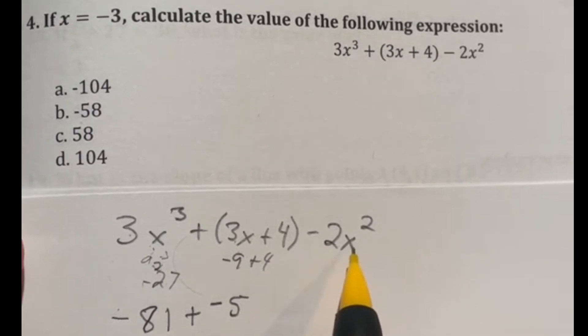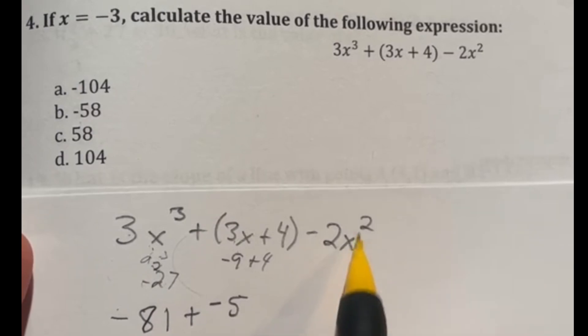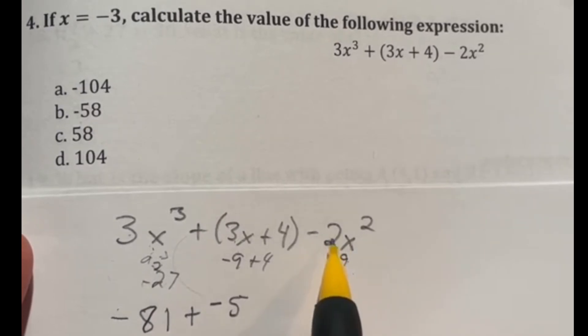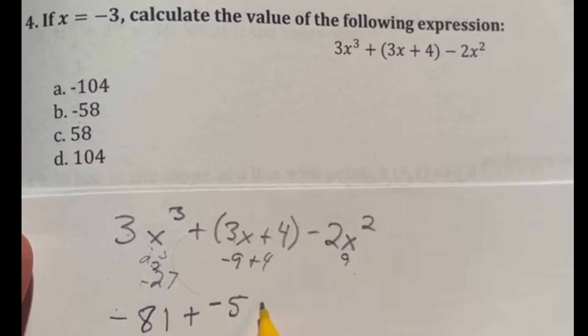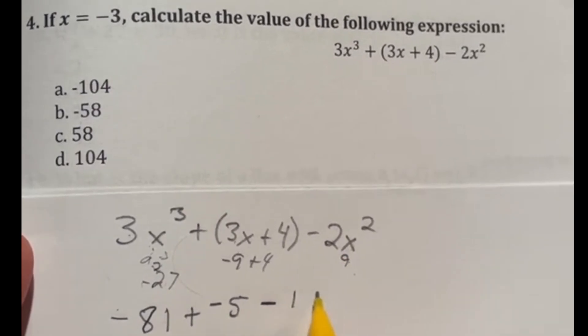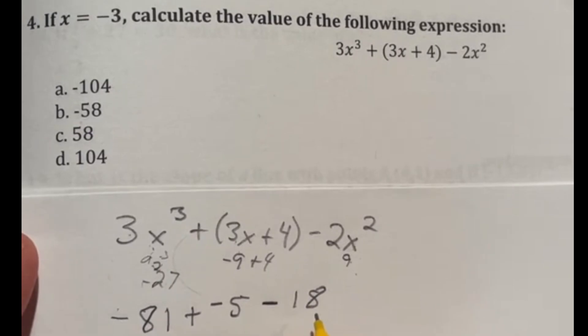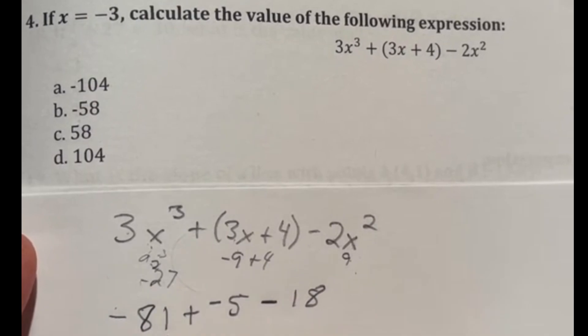And then last but not least over here, we have -2 times x squared. So this is -3 again, -3 times -3, that's a positive 9, 9 times the -2 is going to give us -18. So we're looking at a fairly large negative number here.